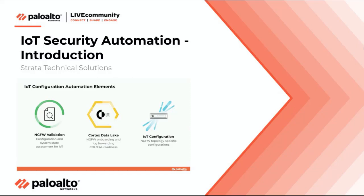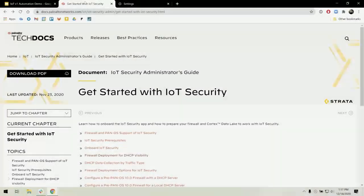Welcome. In this video, I'm going to give a quick introduction into the IoT security automation, which was developed by the Strata Technical Solutions Automation Team. The goal of this automation is to simplify the configurations necessary to get a next-gen firewall IoT ready. All of these config changes are in line with the IoT Security Admin Guide instructions for getting started with IoT security.